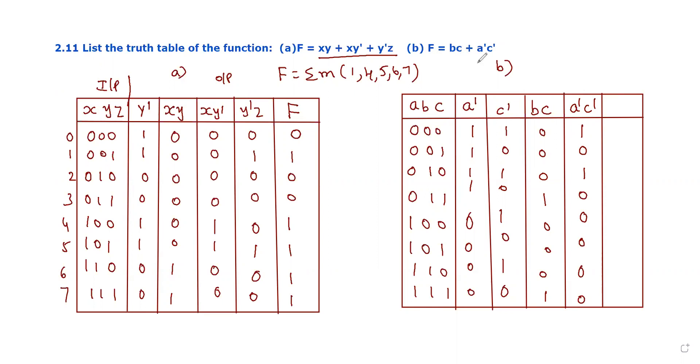For f, we sum these 2 product terms using OR. If any input is 1, the output is 1. This is how we develop truth tables for each Boolean function and write the minterm numbers. Thank you.